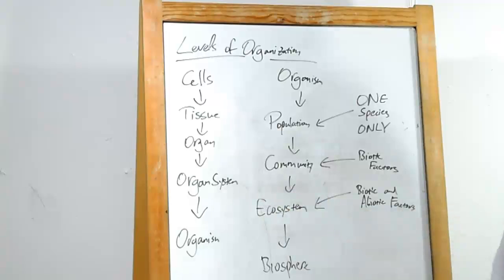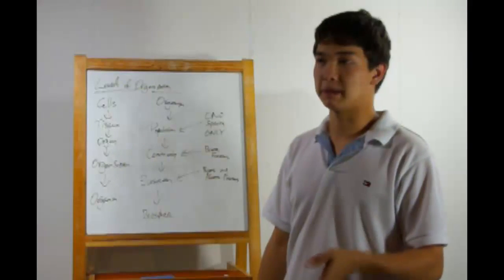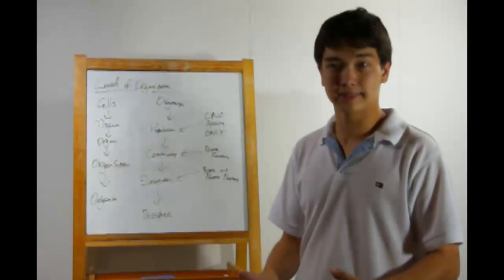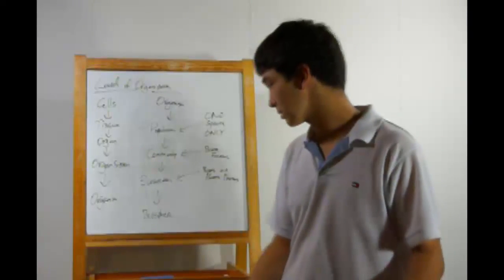A bunch of organs put together will go into the organ system. The liver could be part of the digestive system, as it helps detoxify substances that might be harmful in your food.